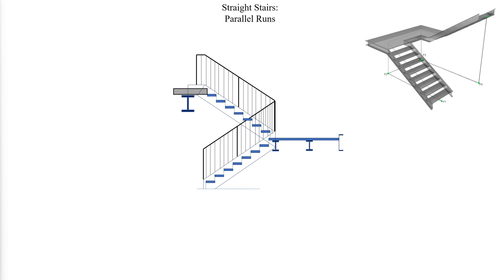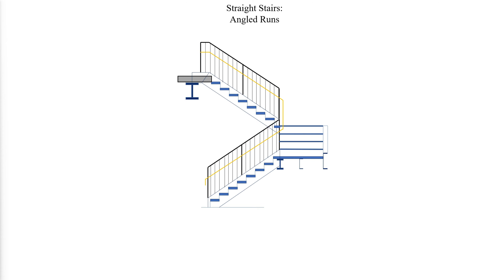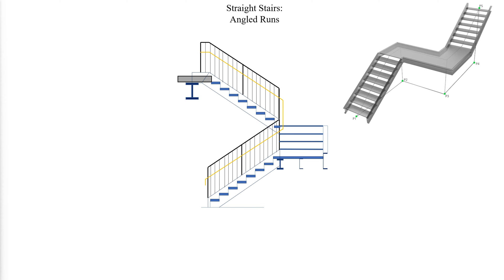Parallel runs have successive flights which are parallel to each other and are separated by one or more intermediate platforms. Angled runs have successive flights placed at an angle to each other with an intermediate platform between each flight. Stair flights placed at an angle of 180 degrees are classified as parallel.